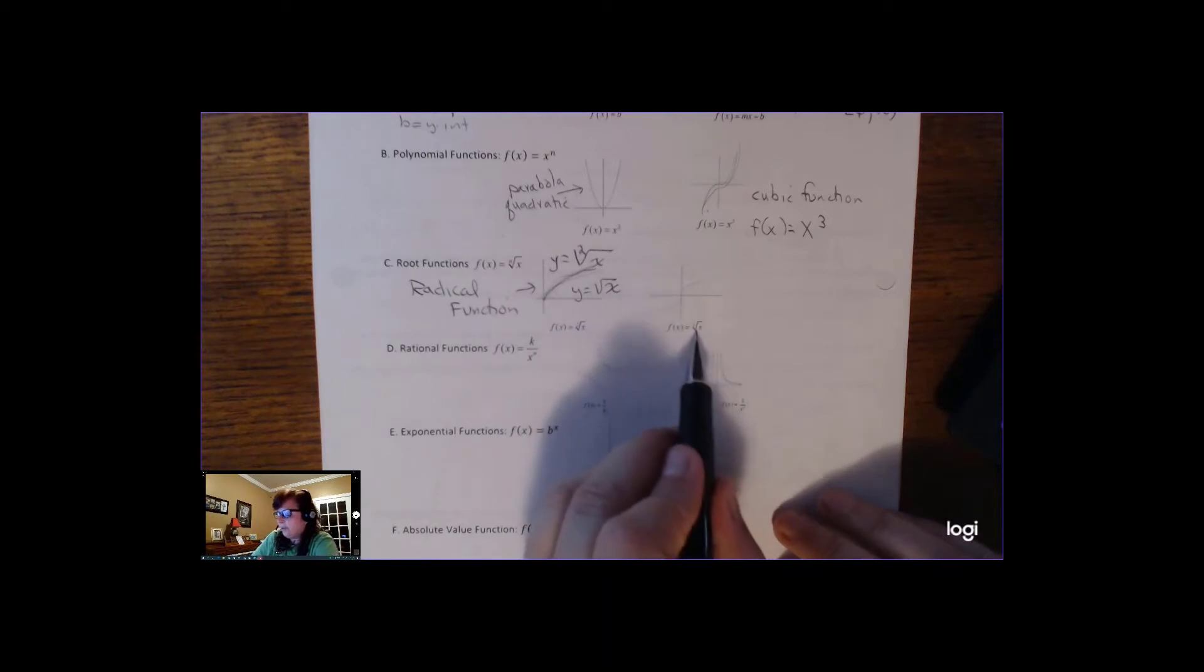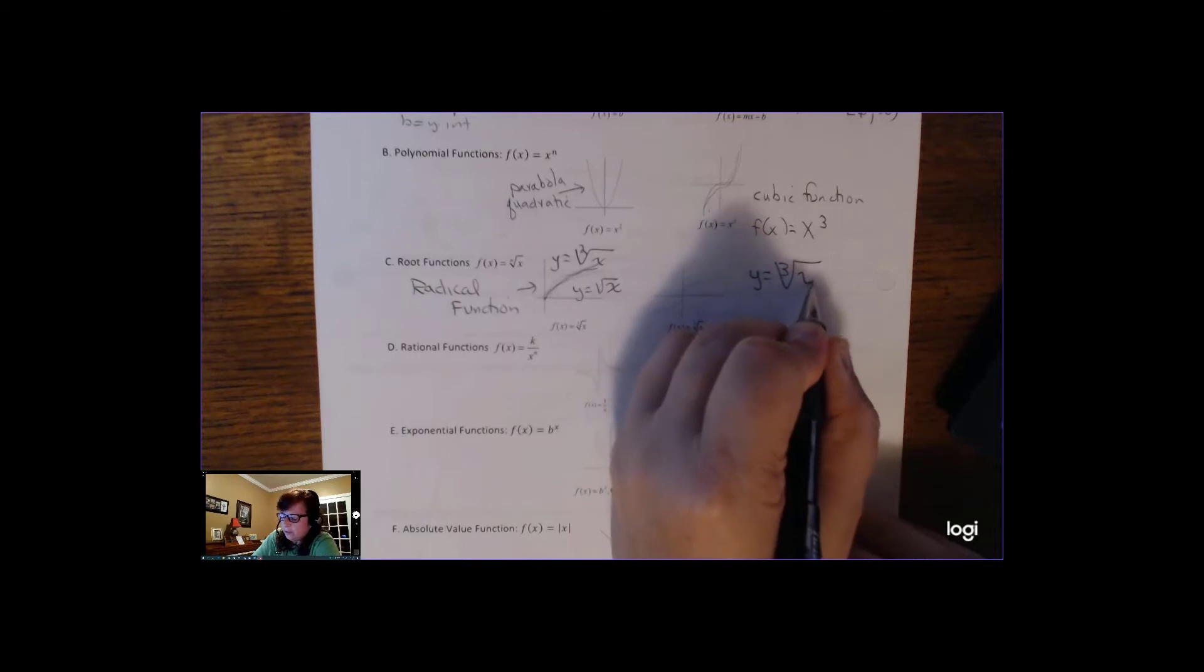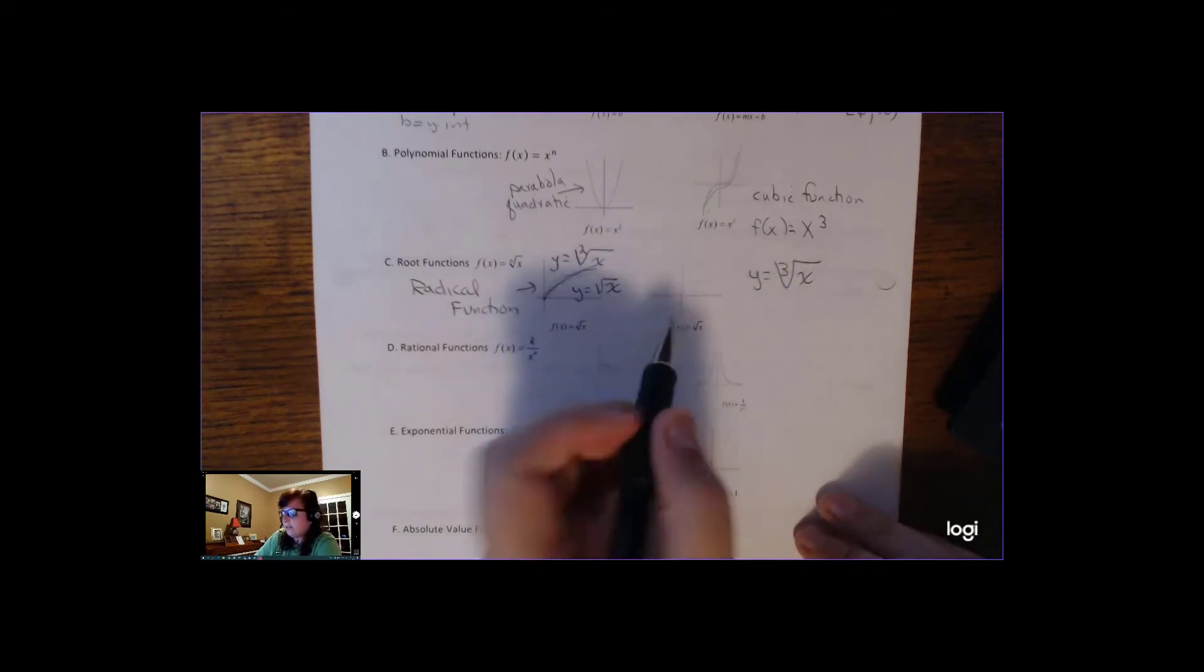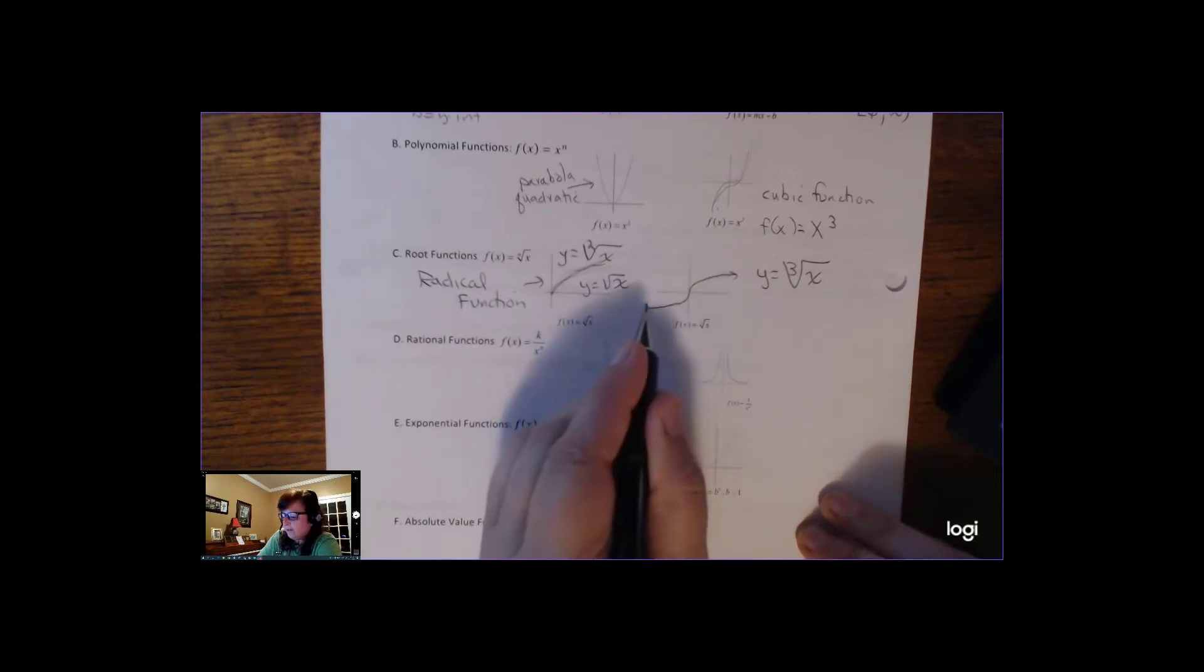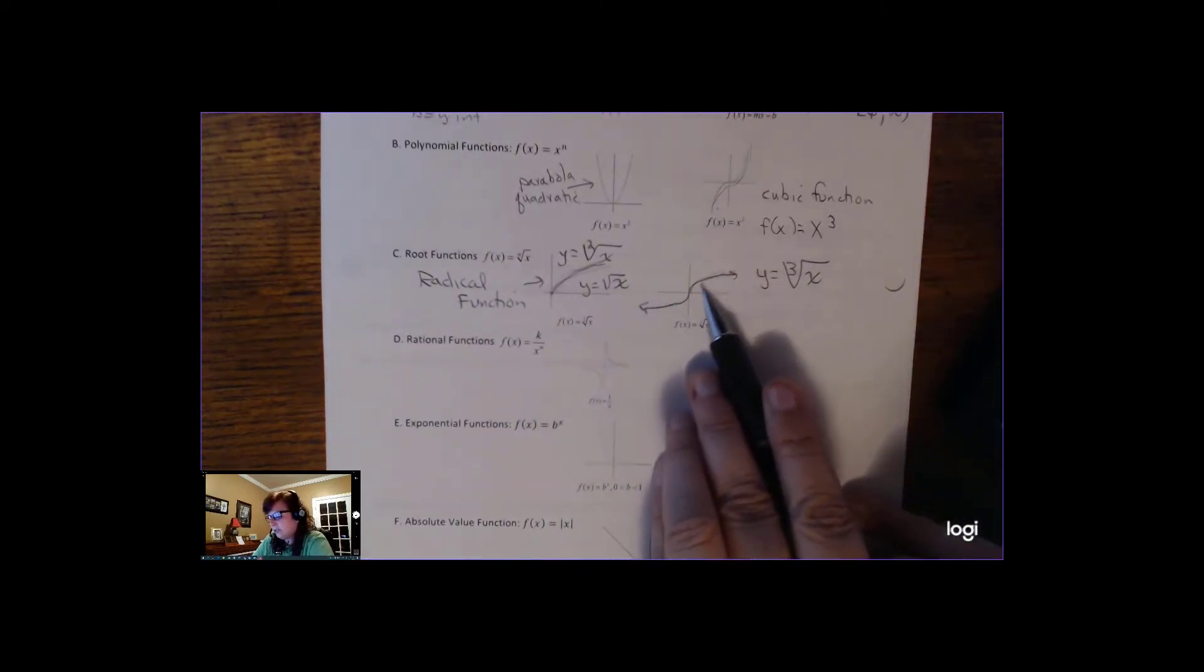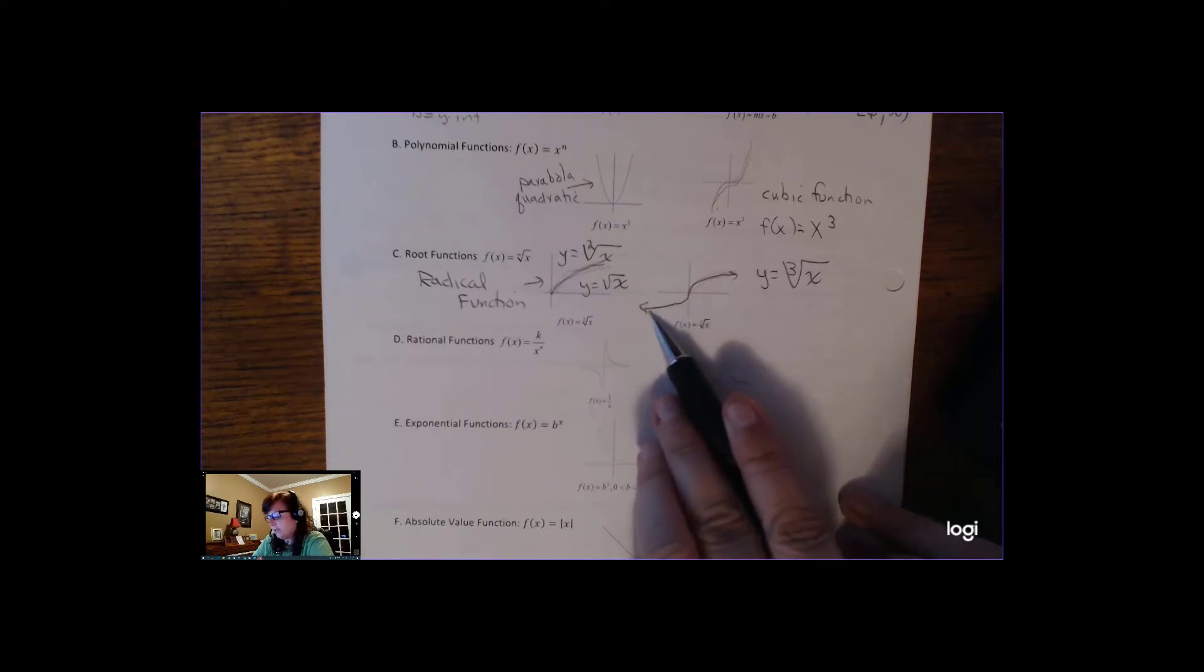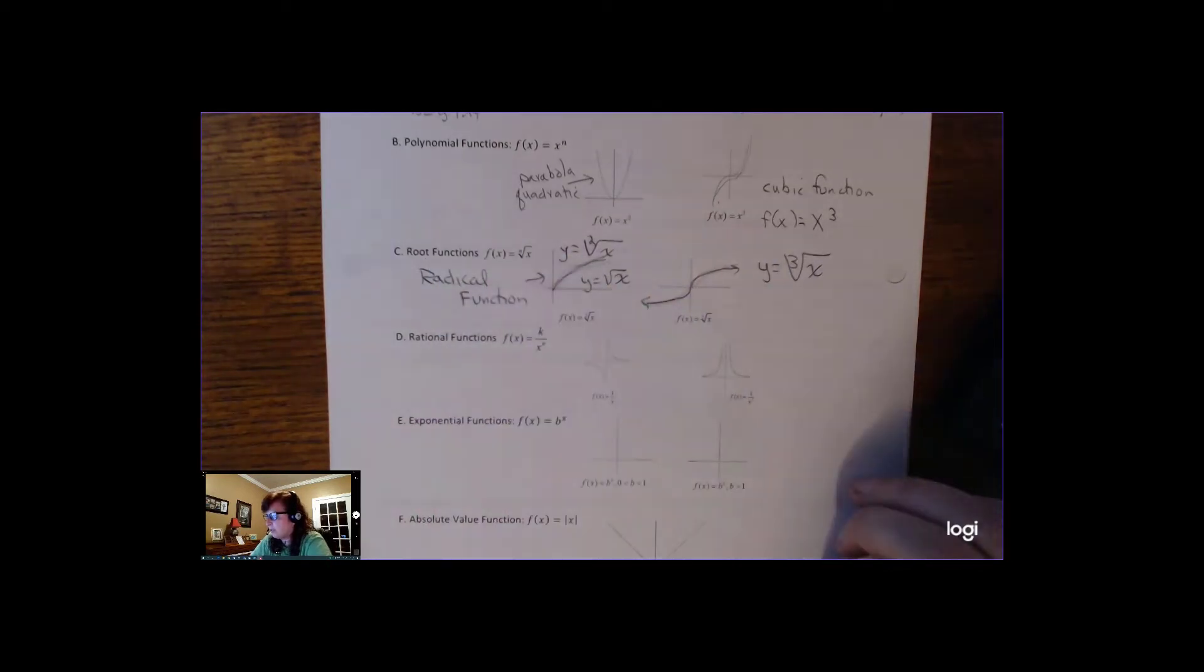If you have an odd index like this, it's also called a radical function. But what happens is it becomes something like that. So it has a similar shape here, but it also gets reflected or rotated, and it's also going this way. So that's what radical or root functions look like.